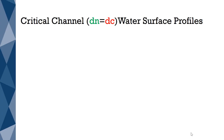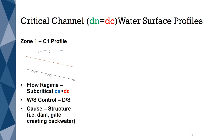The third channel type is a critical channel, where the normal depth is equal to the critical depth. A C1 profile is formed in Zone 1, when the flow regime is subcritical. By definition, a subcritical channel flow condition occurs when the actual depth is greater than the critical depth. Flows that are subcritical are always controlled downstream. For a C1 profile, this is the result of a hydraulic structure that causes backwater, such as a dam.